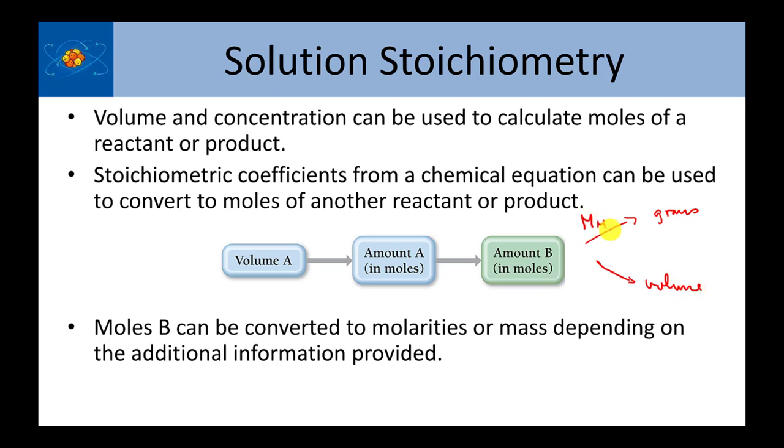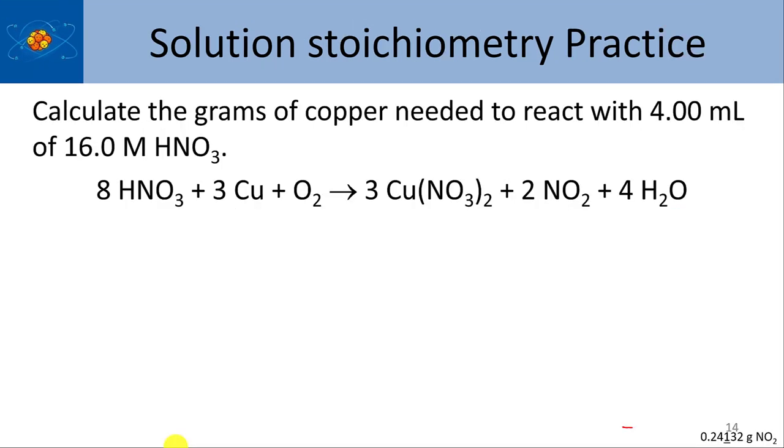This requires a molar mass, and this is just the molarity at this point here. Take a look at this problem. We have to calculate the grams of copper needed to react with 4 mLs of nitric acid. And we have the balanced chemical equation in front of us.